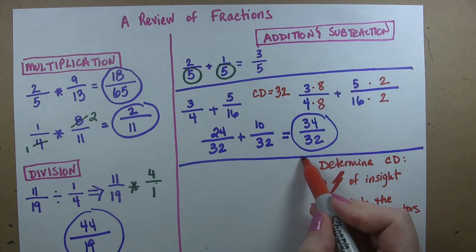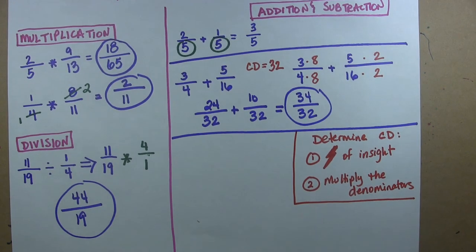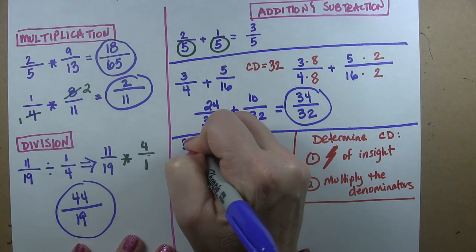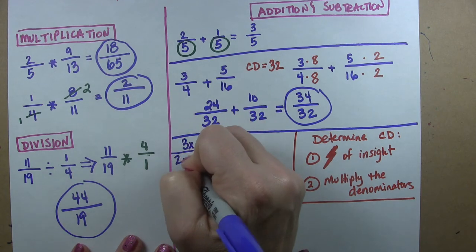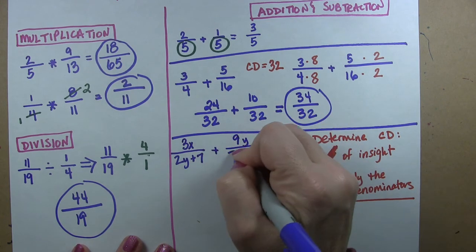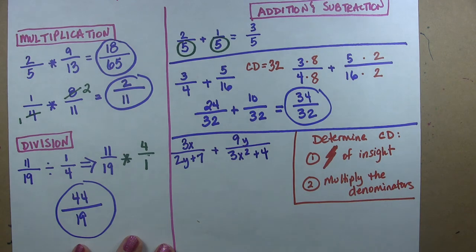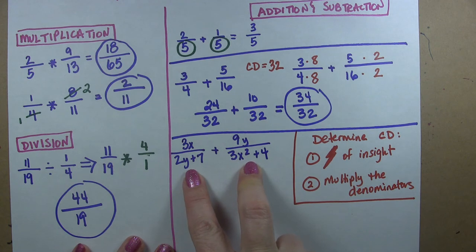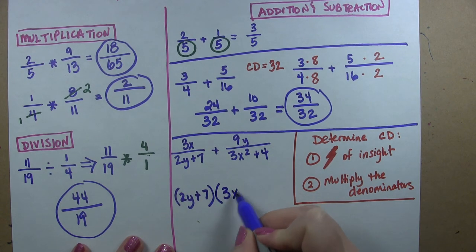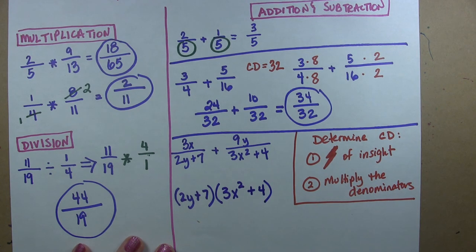Now this multiplying the denominators method is really helpful when you're dealing with more complicated type equations. Let's say, for instance, that I have 3x over 2y plus 7, and we're going to add that to 9y over 3x squared plus 4. Let's say we were going to do that. Well, that makes my head hurt to think about what two things could go into that. So instead, I'm just going to make my common denominator 2y plus 7 times 3x squared plus 4. And then that becomes my common denominator, and I don't have to think about things anymore.